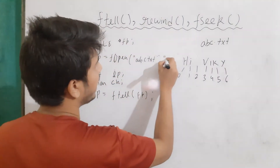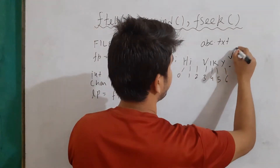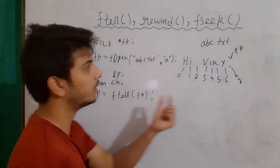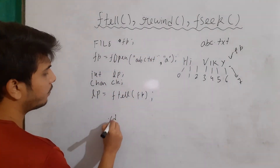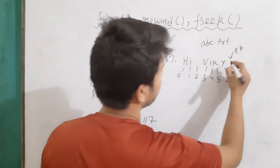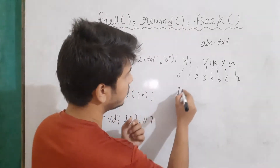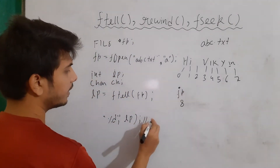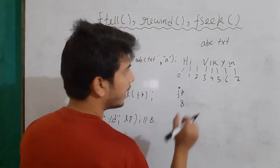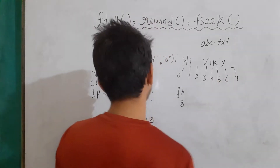Now let's open the same file in append mode. In append mode, the file pointer is placed at the end of the file. When we use ftell, it is going to return 7, because fp is pointing to that location. Then printf %d lp will give output as 7. Note that sometimes there will be a newline character (\n), in which case fp points one further and ftell returns 8. So don't worry about that extra value — it's due to the \n. Without \n, append mode gives output 7.